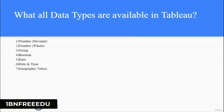You can enable live and extract options from the data source pane on the top right under Connection. Next question: What are the data types available in Tableau? There are seven data types: Number (Decimal) for floating numbers, Number (Whole) for integers, String, Boolean for true and false values, Date, Date and Time, and Geographical values.